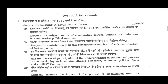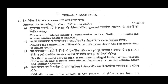Now starting Section A. Question number 1: Answer the following in about 150 words each. Each sub-question carries 10 marks, making a total of 50 marks. Question 1(a): Discuss the subject matter of comparative politics. Outline the limitations of comparative political analysis.